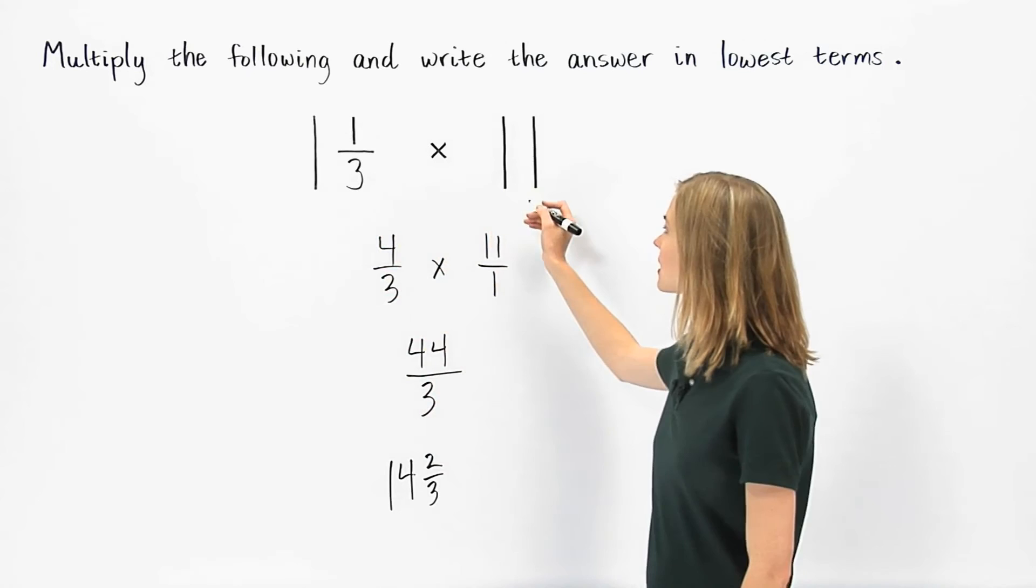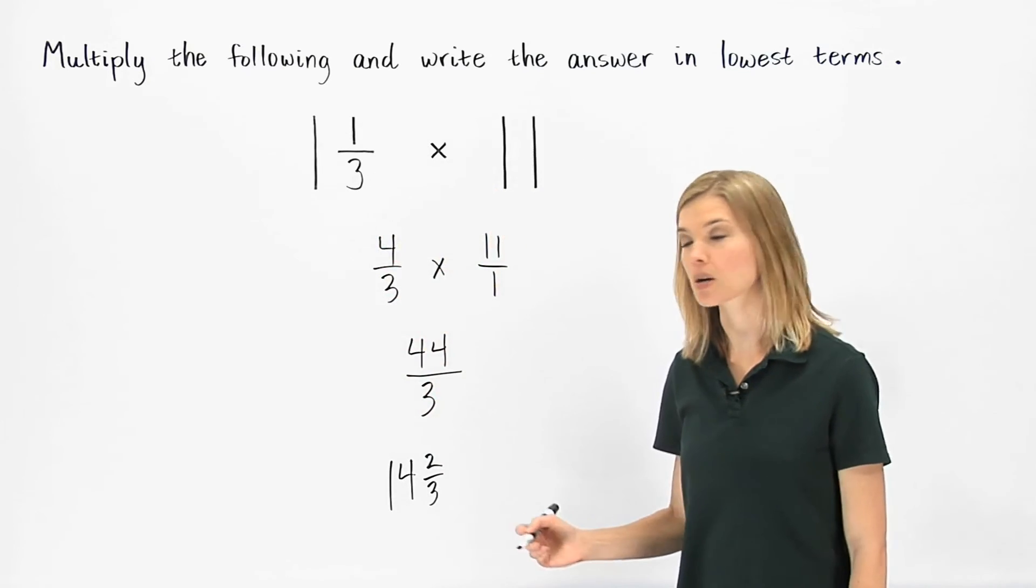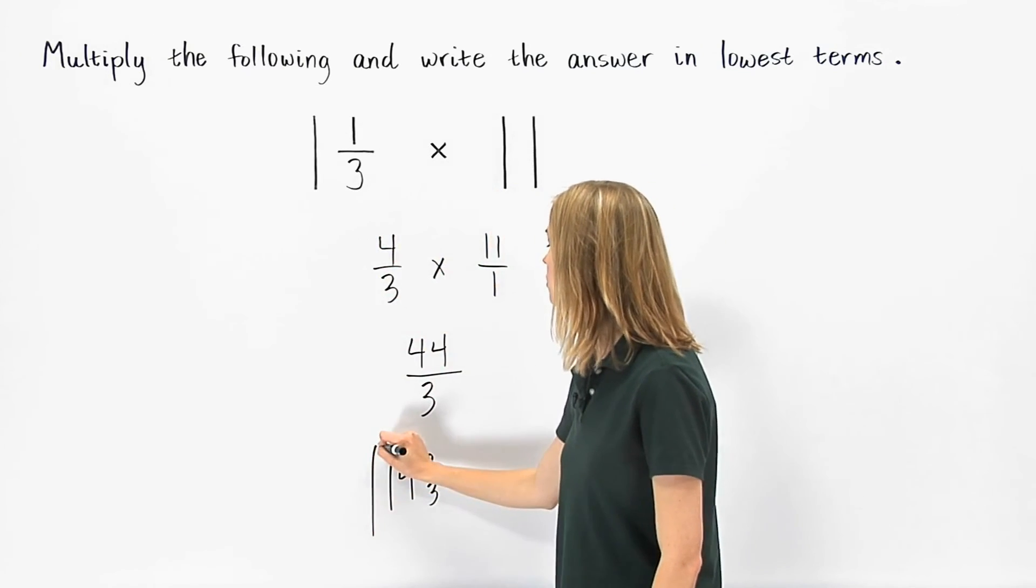So 1 and 1 third times 11, written in lowest terms, is 14 and 2 thirds.